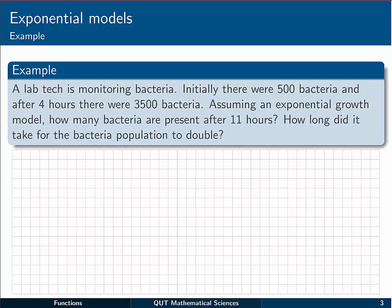So the first thing that I like to do when I'm given these questions is to try to pick out the important information from what I'm told, and also to try to write down exactly what the questions are that were asked. In this particular one, we're told that initially, that's a time value, there are 500 bacteria that the lab tech is monitoring. Now remember, initially, that's just another way of saying t equals zero. So initially there's 500.